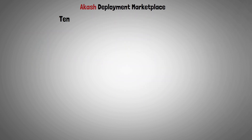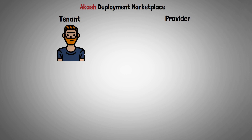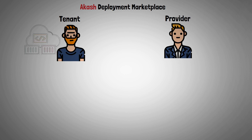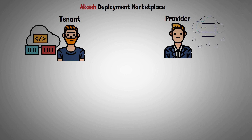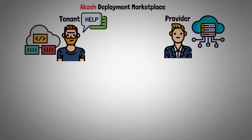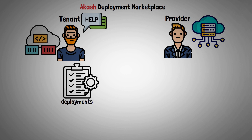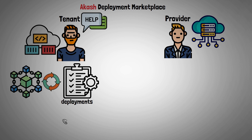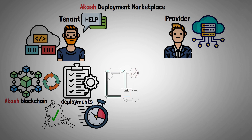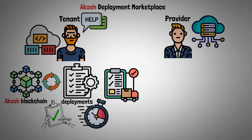Tenants and providers are the two main players in the Akash marketplace. Containerized applications are deployed by tenants, while they are hosted by providers. The resources that a tenant is requesting to host their application on the network are fully described in deployments. Requests are immutably stored on-chain by deployments submitted to the Akash blockchain, and the submission almost immediately results in an order being placed on the Akash marketplace.